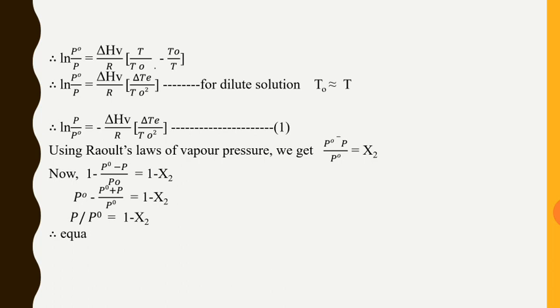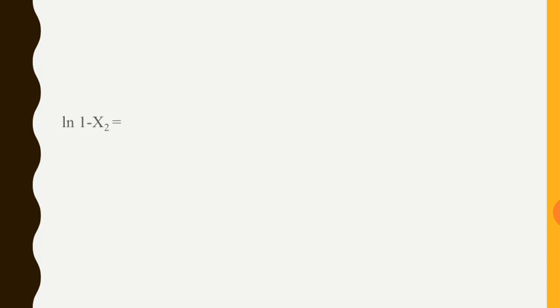Therefore, substituting P/P0 = 1 − X2 into Equation 1, we get: ln(1 − X2) = −(ΔHv/R) × (ΔTe/T0²). This is our Equation 3.